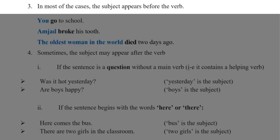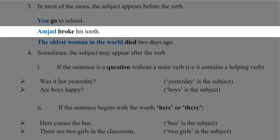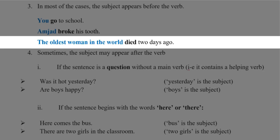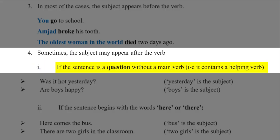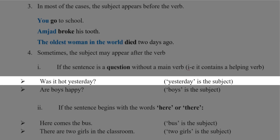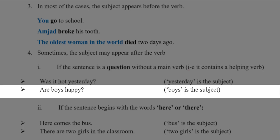Number 3: in most of the cases, the subject appears before the verb. 'You go to school.' 'Amjid broke his tooth.' 'The oldest woman in the world died two days ago.' But sometimes the subject may appear after the verb. When? Number 1: if the sentence is a question without a main verb, then we have the subject after the verb. For example, 'Was it hot yesterday?' The word it, which is the subject, occurs after the verb. Number 2: 'Are boys happy?' The subject boys appears after the verb in this sentence.